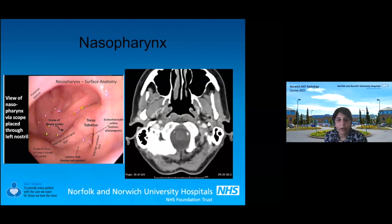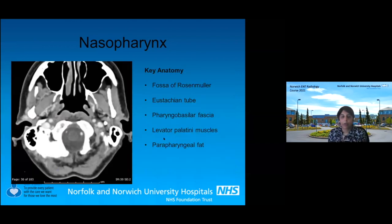This is the fossa of Rosenmüller, the posterior structure which is what you see when you look up through a scope. This is the torus tubarius, which is the cartilaginous portion of the eustachian tube. And this is the eustachian tube. I've labeled the key things we look for on cross-sectional imaging as radiologists.